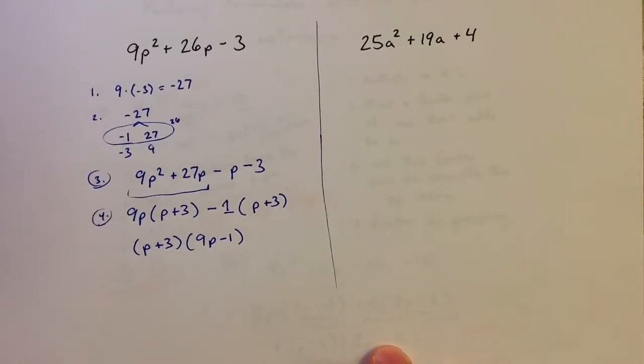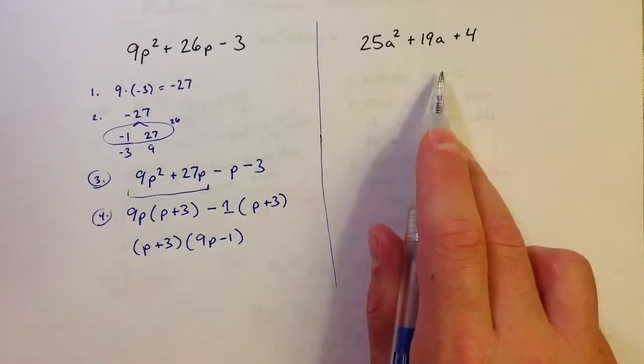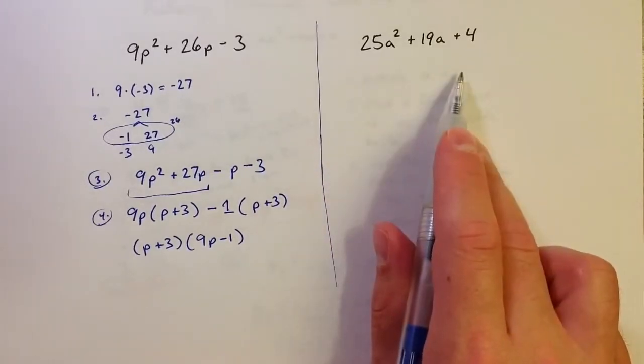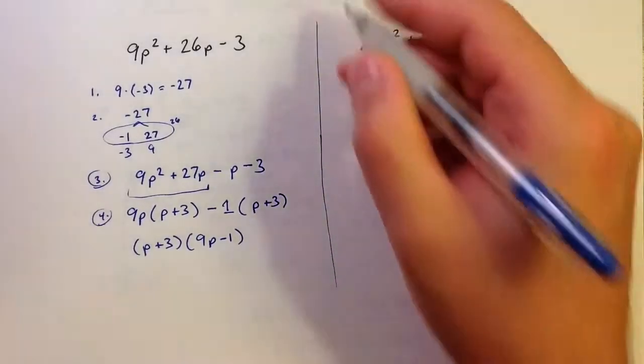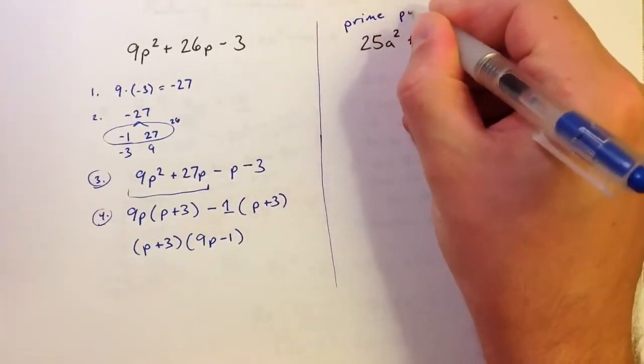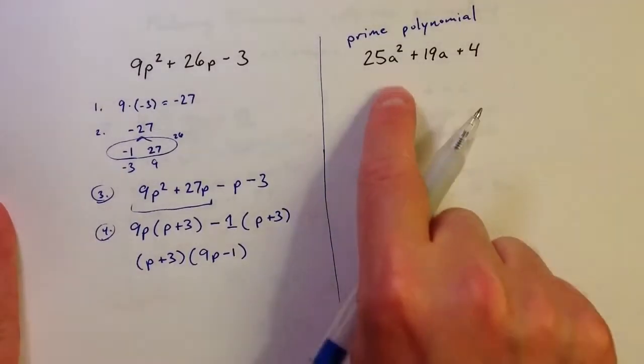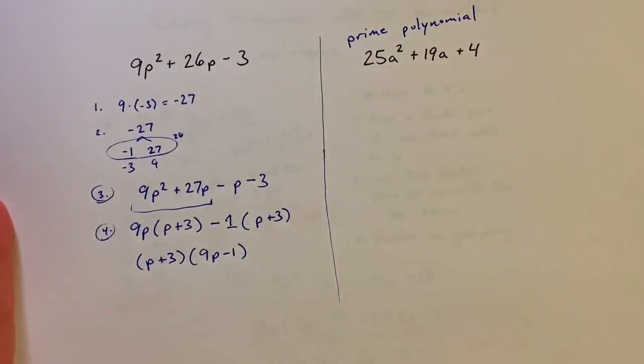I said a moment ago that not all polynomials factor. And so you may be inclined to think that this one doesn't factor. And in fact, it doesn't factor. So this is actually called a prime polynomial because it doesn't factor. Similar to the way prime numbers don't factor into smaller pieces, this polynomial doesn't factor into smaller pieces.